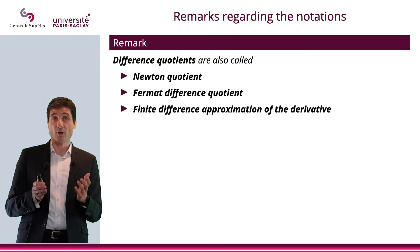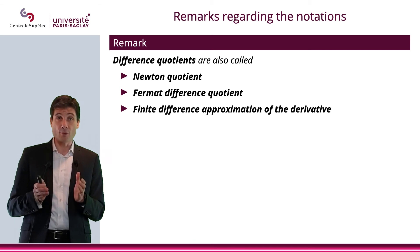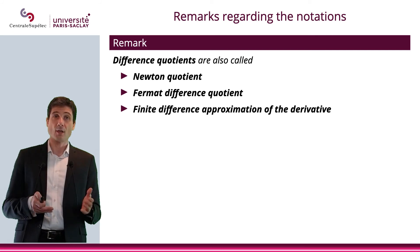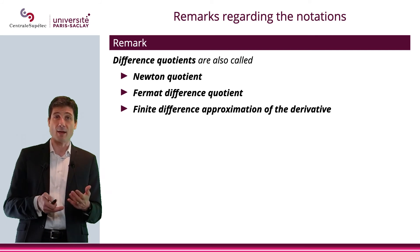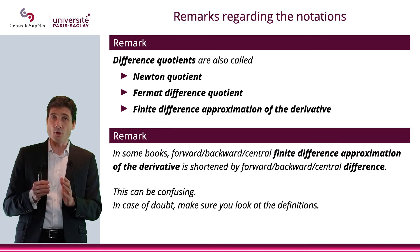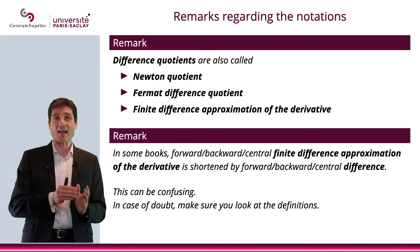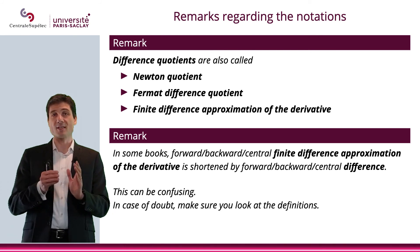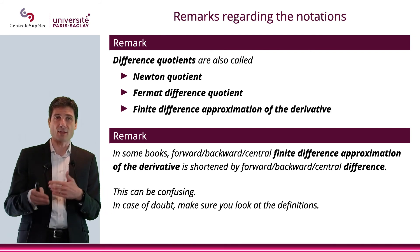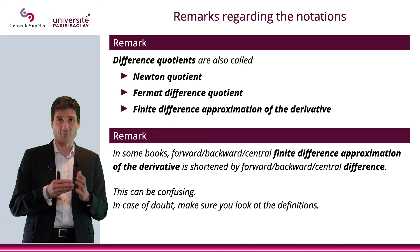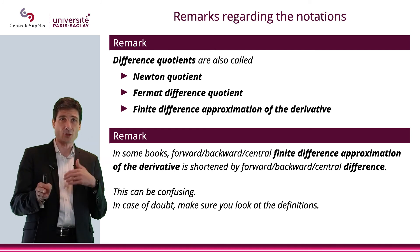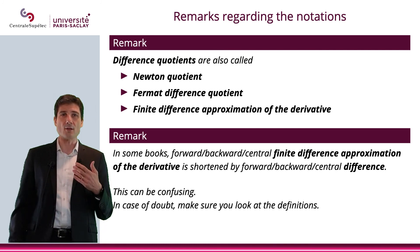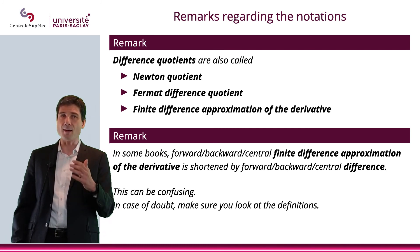Finally, I'd like to make some remarks about notation. The difference quotients have other names — you will see them in some books as Newton quotients, Fermat difference quotients, or finite difference approximations of the derivative. In some books, forward/backward/central finite difference approximation of the derivative is shortened to just forward/backward/central difference, which can be confusing because the forward/backward/central difference is the value not divided by h.